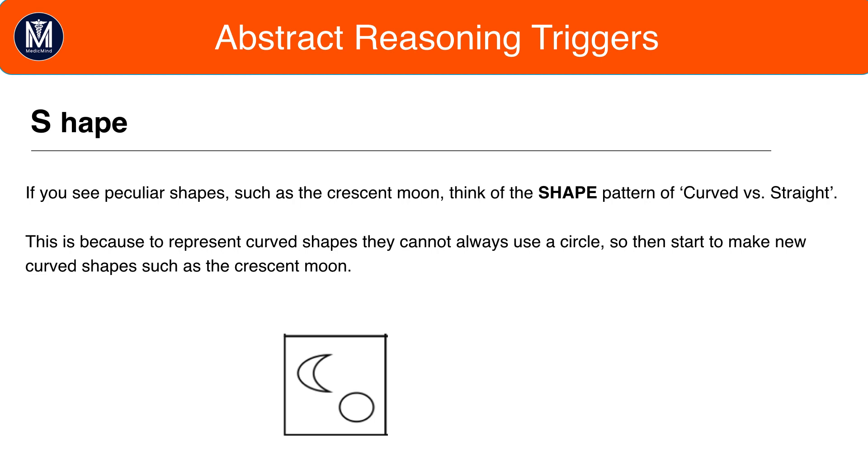This is becoming an increasingly common pattern in the UKCAT and for representing curved shapes the question writers are very limited beyond using just circles. Therefore they run out of shapes and resort to shapes such as the crescent moon. So when you see the crescent moon it should be an immediate sign that you should check for a curved versus straight pattern.